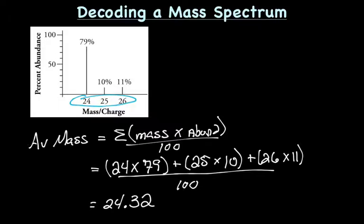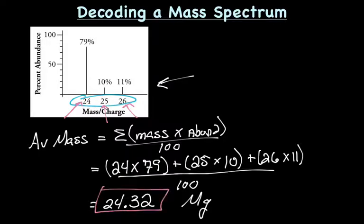I come up with 24.32. So the average atomic mass of this particular element is 24.32 amu, and that turns out to be magnesium. Since I don't know the exact significant figures, I just rounded to two decimal places. That's how you figure out average atomic mass when you have a mass spectrum in percent abundance or relative abundance.